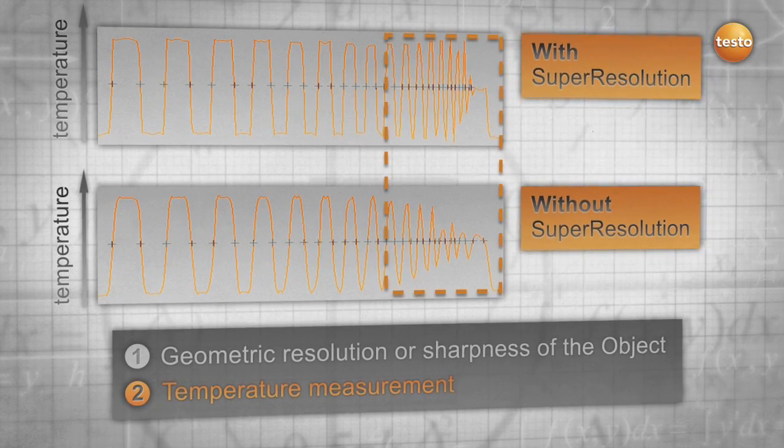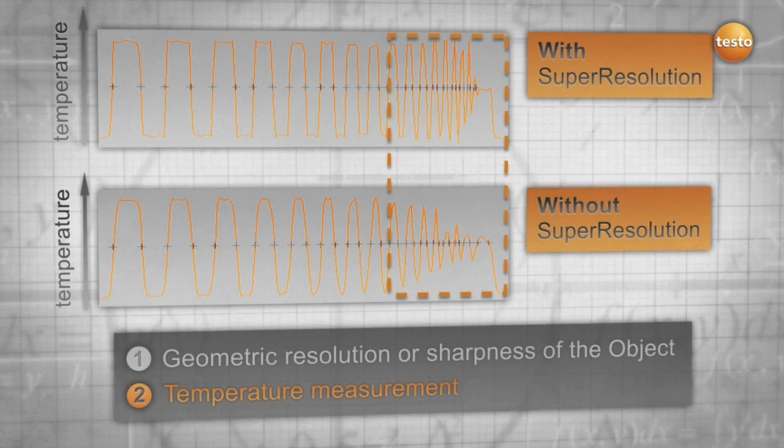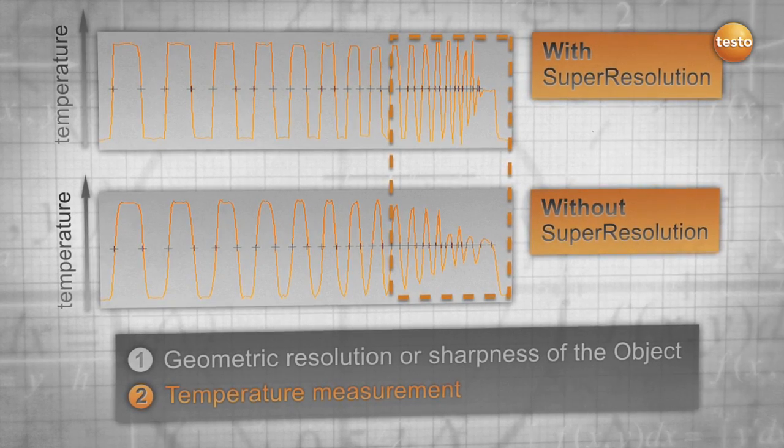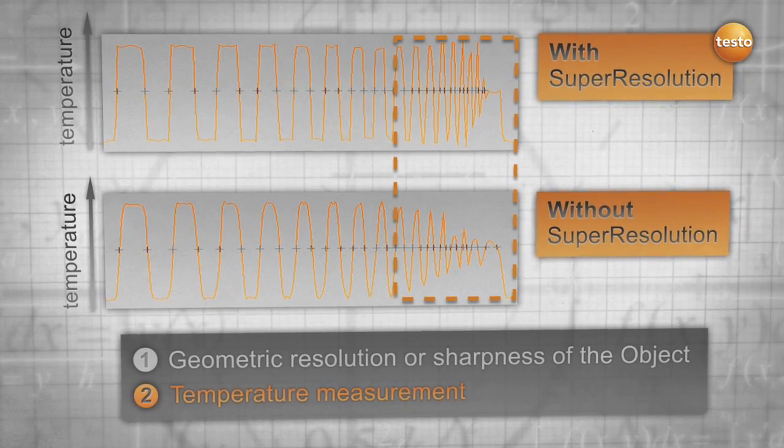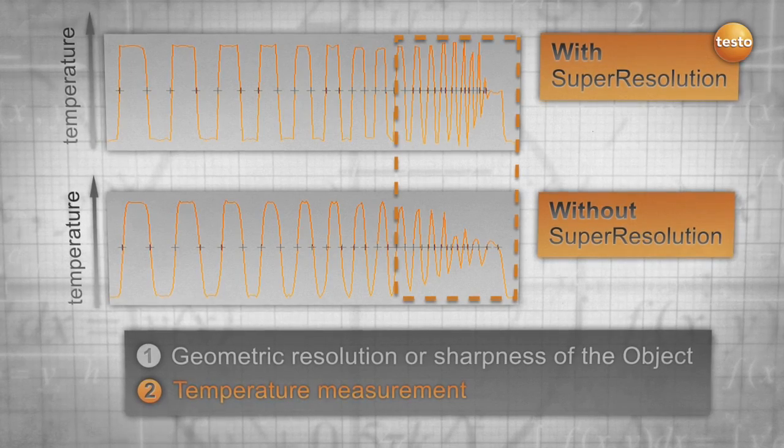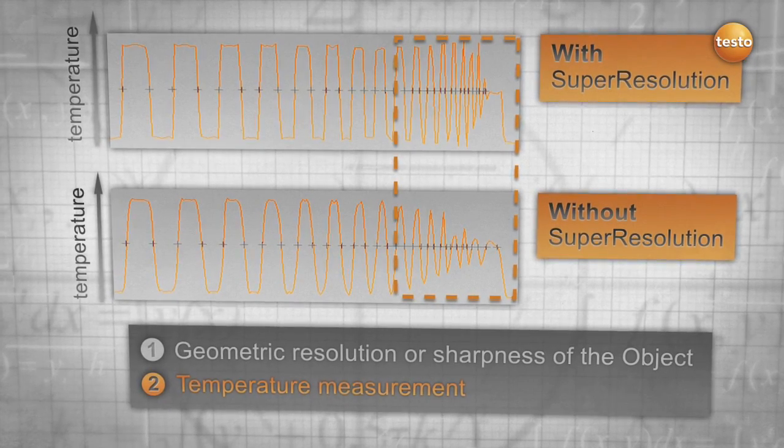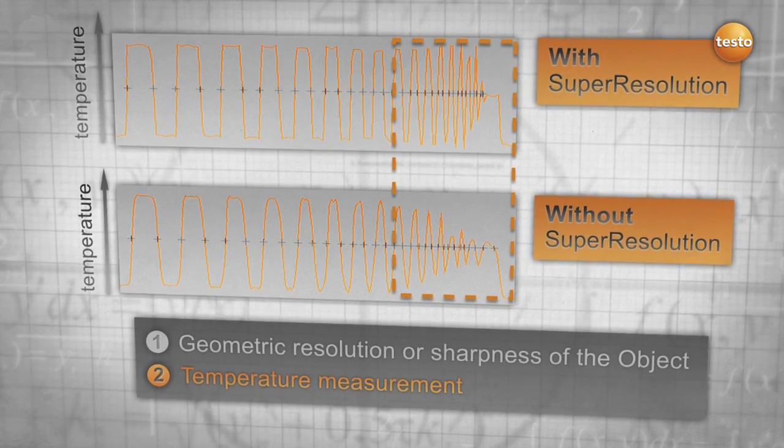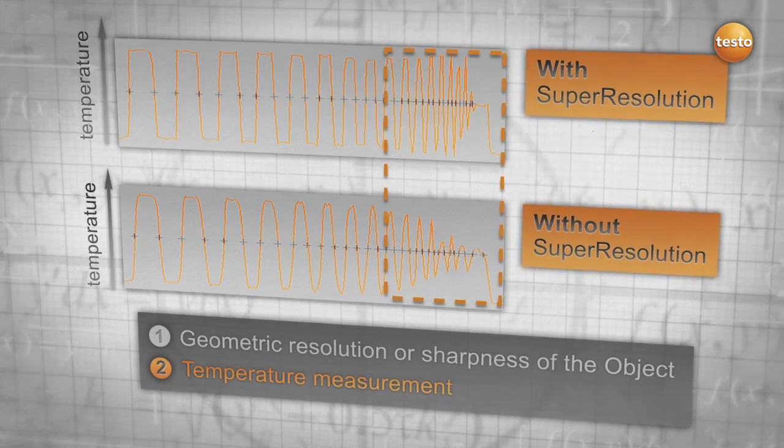Without Super Resolution, the temperature is not correctly displayed where the slots get tighter, and the thermographer might be in danger of logging in wrong numbers, which might lead to wrong conclusions. With Super Resolution, the measurement even of tiny structures remains overall more accurate.